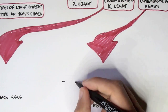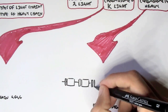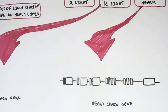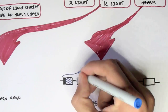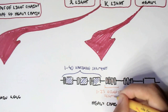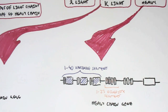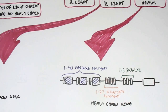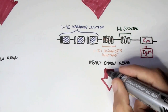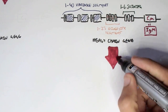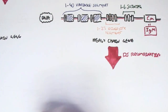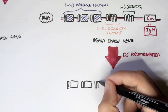The heavy chain gene has many variable, diversity, and joining segments. In the heavy chain gene on chromosome 14, there are about 1 to 40 variable regions, 1 to 23 diversity segments, and 1 to 6 joining segments, plus the constant mu region which encodes the immunoglobulin antibody. The shuffling of these segments creates a unique antibody.